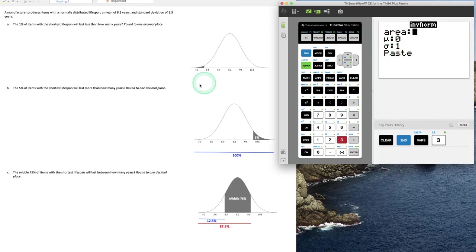For now, since we need area to the left, this works out great. In fact, the area given to the left is 1%, so 0.01. The mean that they gave us was 8.2 lifespan, and the standard deviation was 1.3 years.